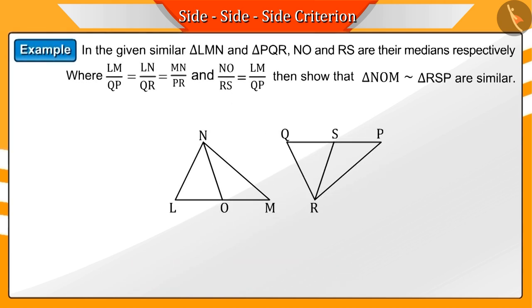In the given similar triangles LMN and PQR, NO and RS are their medians respectively, where LM/QP = LN/PR and NO/RS = LM/QP. Then, prove that triangles NOM and RSP are similar to each other.